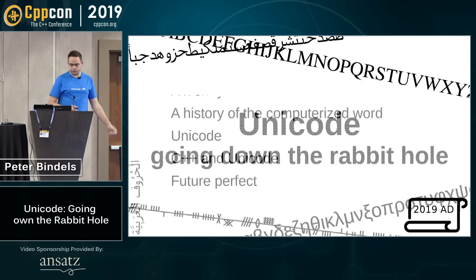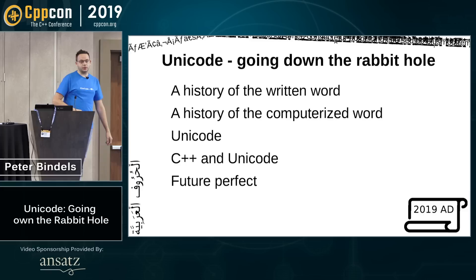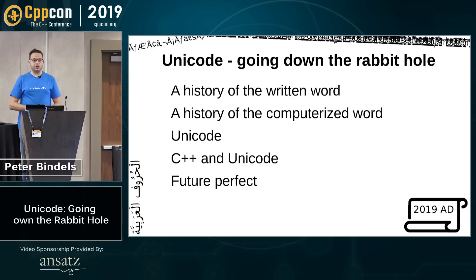Let's start with an overview. We'll talk about the written word, the computerized word, what Unicode actually is, what it's for, where it comes from, and what kind of corner cases we have. Then we'll talk about C++ and Unicode, because C++ has a bit of history. And then we'll talk about the future perfect.